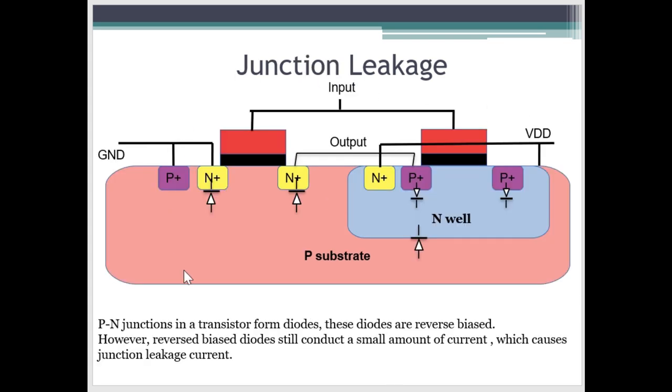Now let's see what is junction leakage. We know that in our CMOS transistor, there are so many PN junctions. And these PN junctions form diodes and these diodes are in reverse bias. And we know that there is still a small amount of current that flows through a reverse bias diode. That small amount of current is the major cause of junction leakage.